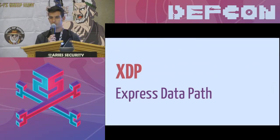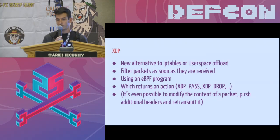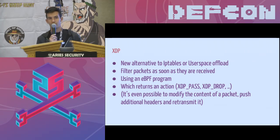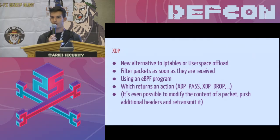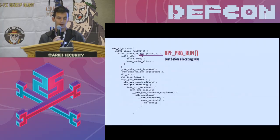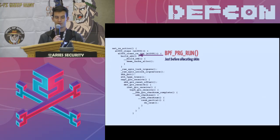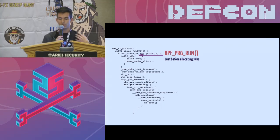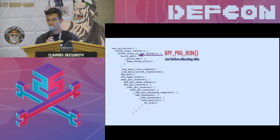The future is XDP, or Express Data Path. XDP is a new technology recently introduced in the Linux kernel and it's a concrete alternative to IP tables or user space offload. The idea is to filter network packets as soon as they are received by the network card, using an eBPF program which takes a packet as input and produces an XDP action as output — which can be XDP pass, meaning the packet should proceed to the network stack, or XDP drop, meaning the packet should be dropped. If you remember the call trace slides, this is where XDP runs — just at the beginning, as soon as you receive a packet inside the network driver, before even allocating SKBs — you run your eBPF program and decide if you want the packet to flow through the network stack or just drop it.